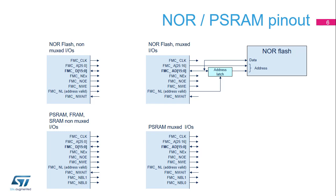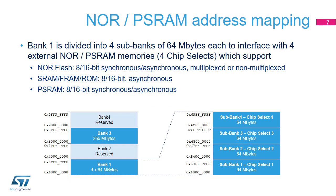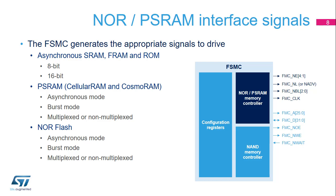FMCNEX is one of the four chip select signals, one per sub-bank. Regarding the PSRAM interface, the FSMC accesses the right data through its byte lanes FMCNBL0 and 1. Bank 1 is used to address up to four NOR Flash memories or PSRAM devices. This bank is split into four NOR or PSRAM sub-banks of 64 MB each with four dedicated chip selects to interface with 8 or 16-bit synchronous or asynchronous NOR Flash in multiplexed or non-multiplexed mode, 8 or 16-bit asynchronous SRAM, FRAM and ROM asynchronous, and 8 or 16-bit synchronous or asynchronous PSRAM memories. The FSMC outputs a unique chip select signal to each sub-bank and performs only one access at a time to an external device. The external memories share address, data and control signals.